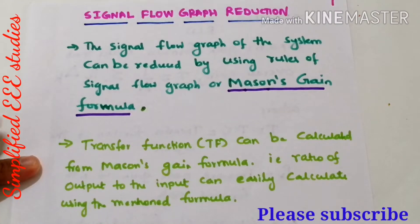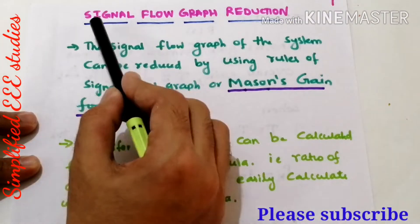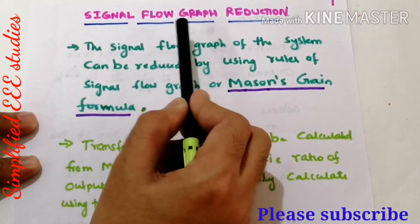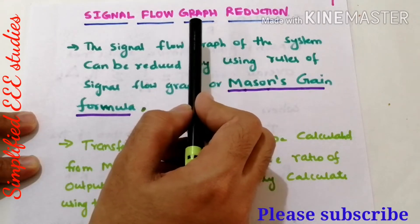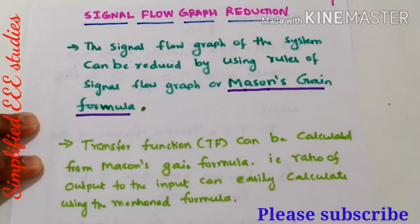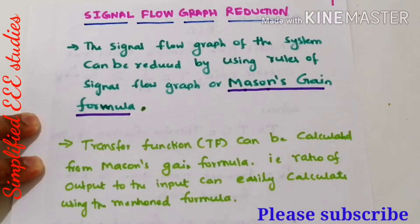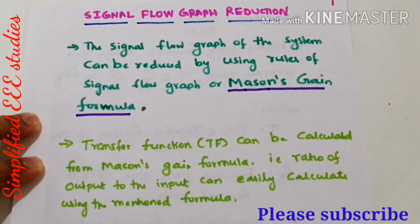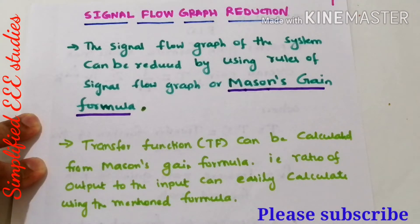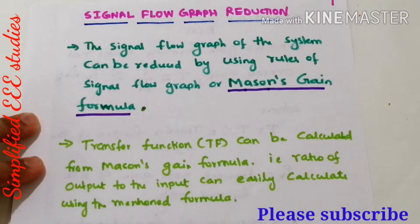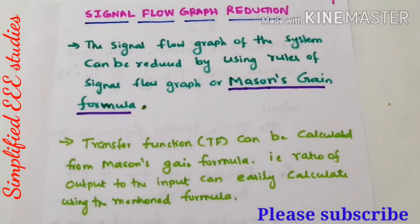Hello everyone, in this session I will be discussing signal flow graph reduction methods. There are two methods of doing signal flow graph reduction. The first method is you can reduce the signal flow graph by using different rules of signal flow graph algebra. The second method is you can go for Mason's gain formula.